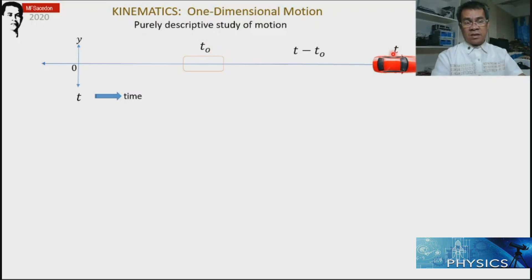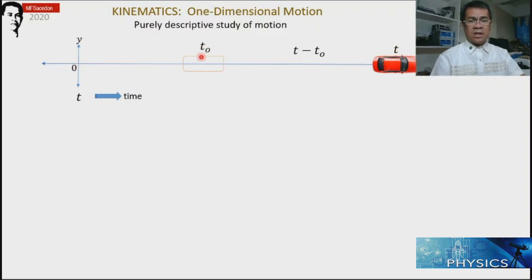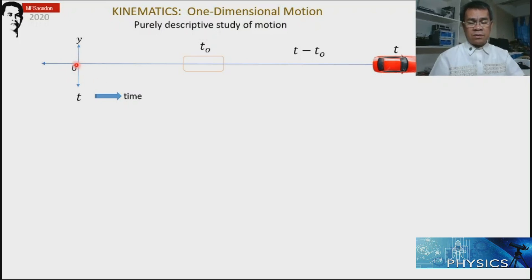The time interval is the difference: final minus initial. Take note that time t is always measured from the point of reference. So therefore, we cannot provide initial time and final time without the reference point. At the reference point, our time is needed to be zero and our position is also zero.